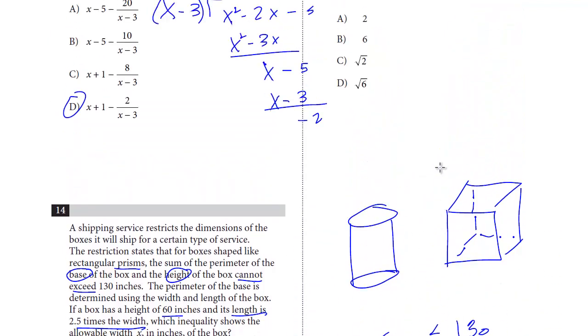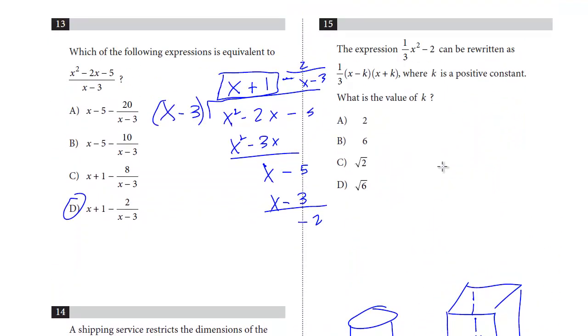Last question before the grid-ins: Number 15. The expression can be written as this, where k is a positive constant. What's the value of k? Let's think about this - here is the difference of perfect squares. Whenever you see two equal parts with a subtraction, it could be x minus 8, x plus 8. We know that's the factor difference of two perfect squares. The middle terms will cancel out because this is going to be x squared minus 64 - we get a minus 8x plus 8x, those will cancel out. This is the difference of perfect squares.